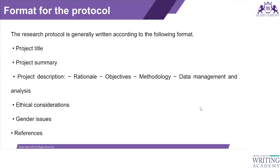In the project description section, you provide the study rationale, the primary and secondary objectives, and the methodology. This includes an overview of the study design — for example, whether it is a double-blind, multi-center, or placebo-controlled study — the number of subjects at each investigative site, a brief description of the methods and procedures followed, and the justification for why this study design is being followed.